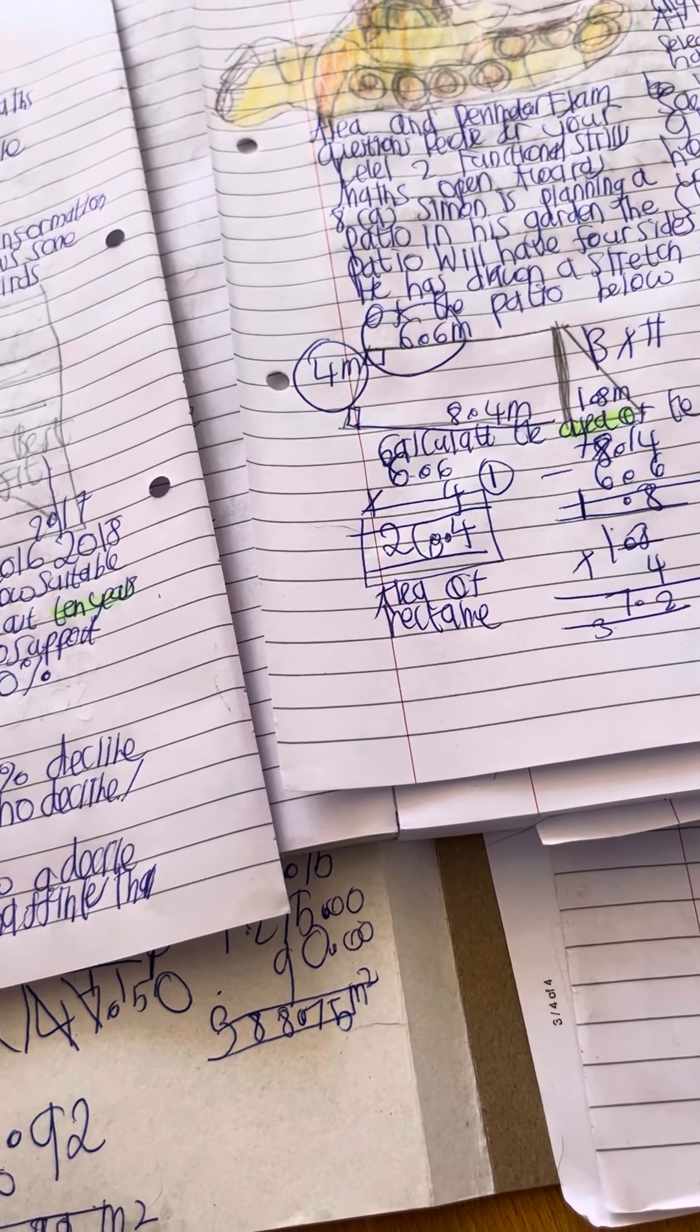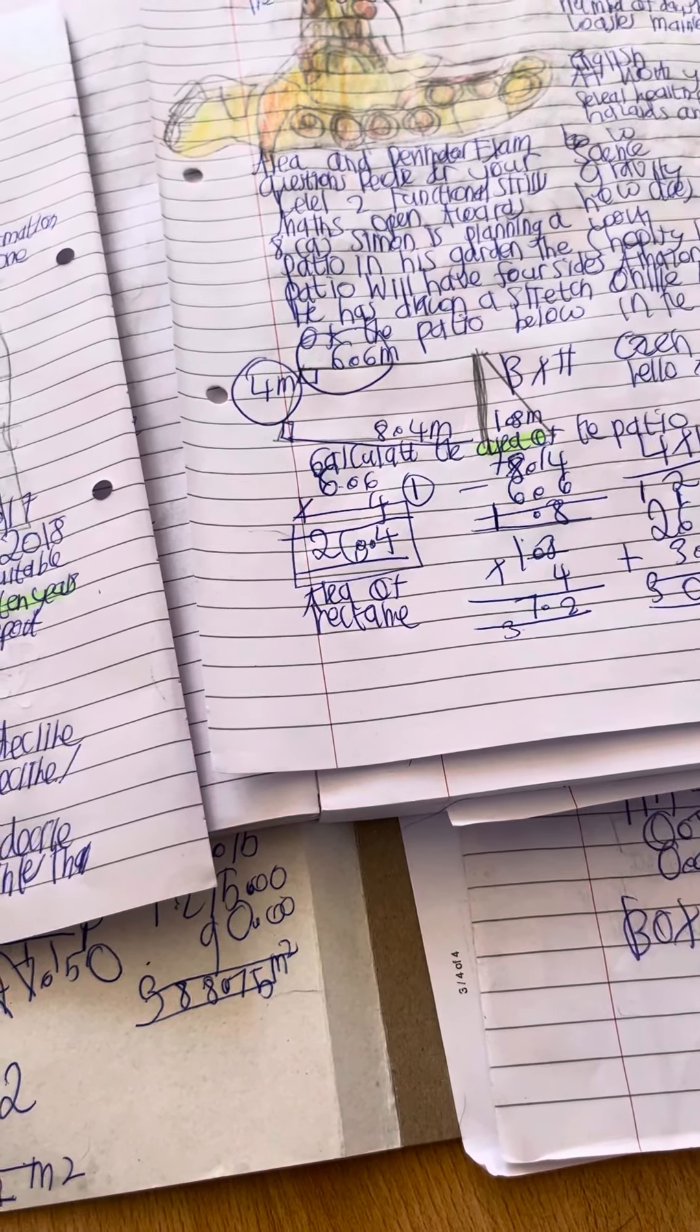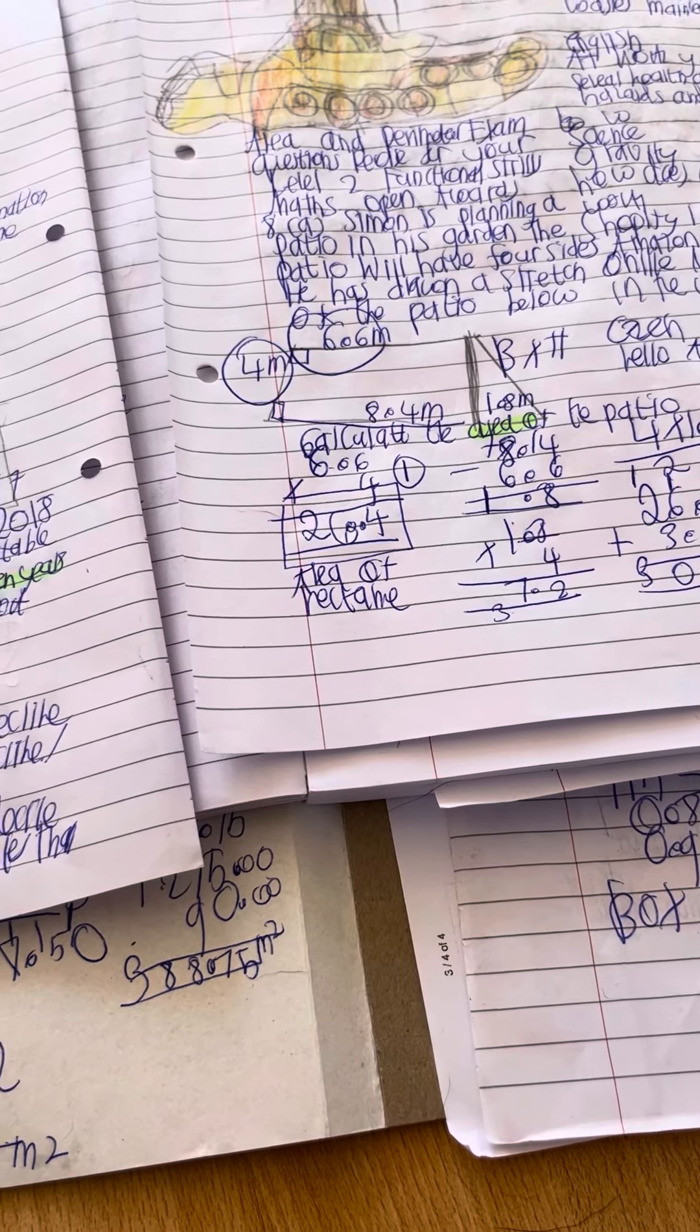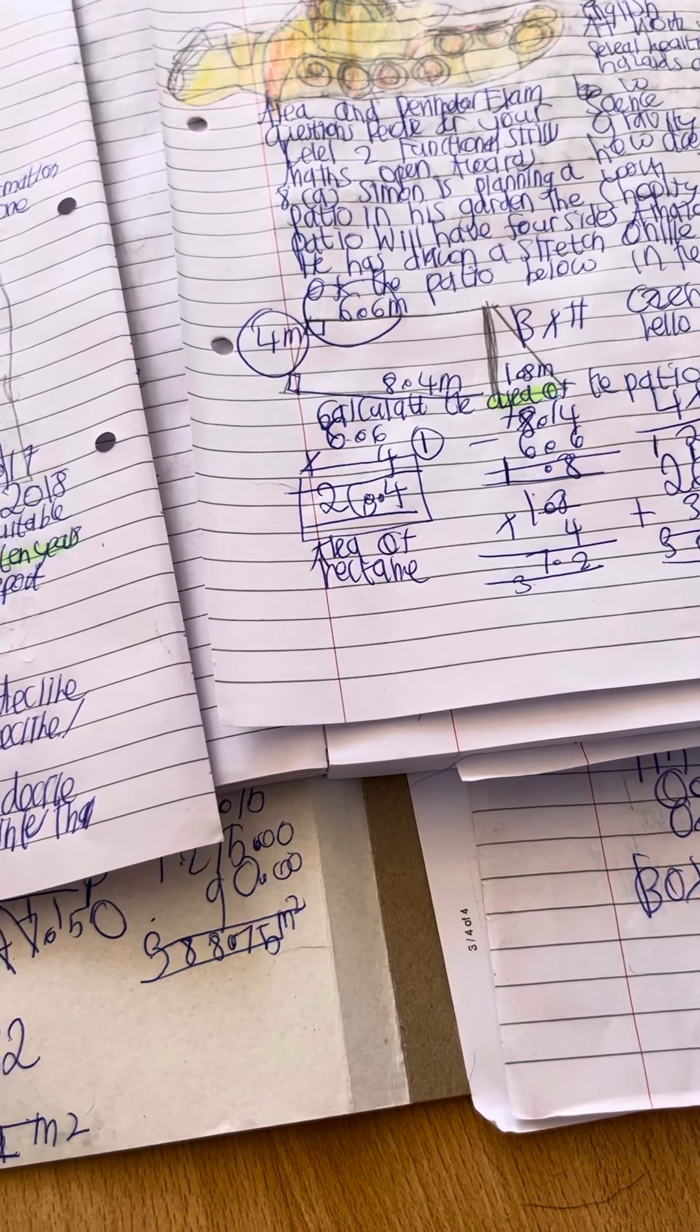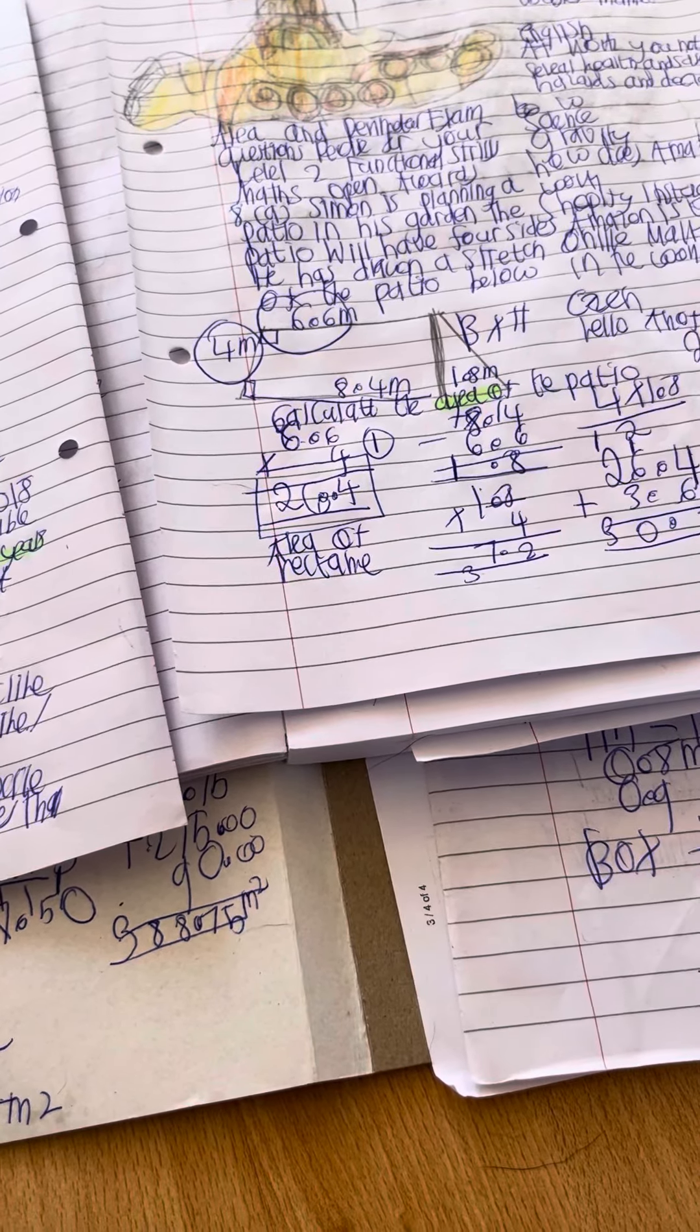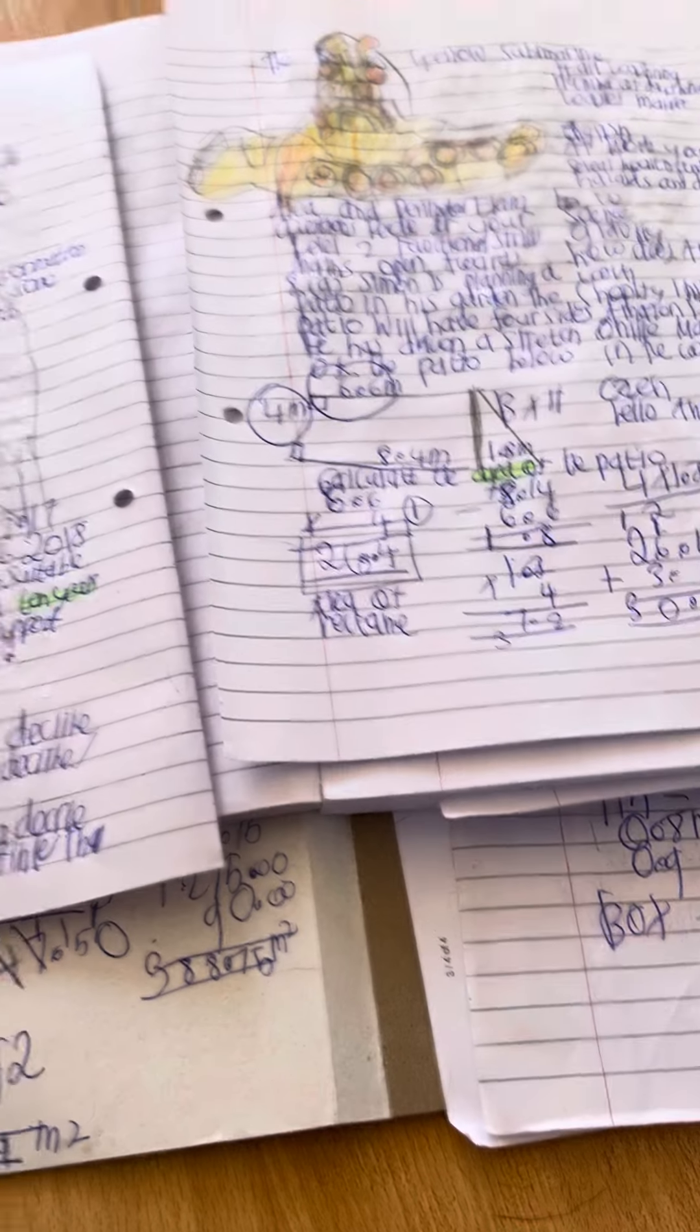Question: revise for your level 2 form field skills maths open awards. Siren is planning a patio in his garden. The patio will have full size. He has drawn a sketch of the patio below. Calculate the area of the patio.